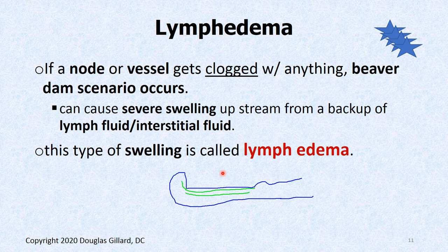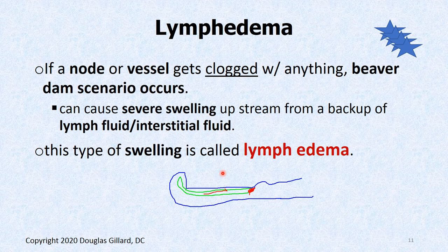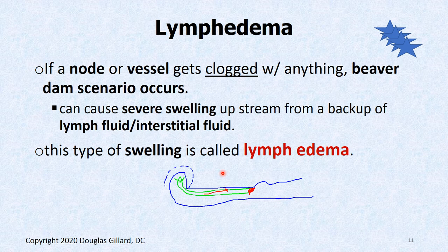What if you get a beaver dam here for whatever reason — maybe a cancer's tumor is pinching the tube or there's a tumor inside? You get a blockage and the fluid can't drain. All the blood vessels trying to get fluid into this region to drain it won't succeed. The foot and leg and everything are going to swell like crazy because of all the fluid that can't drain. That's called lymphedema.